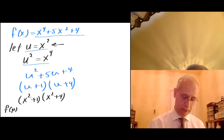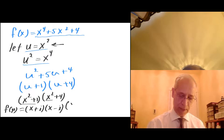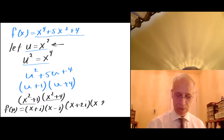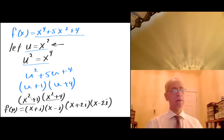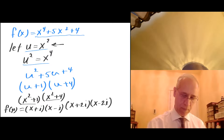The rest of the problem is the same as the previous page. f of x equals x plus i, x minus i from factoring x squared plus 1, and x plus 2i, x minus 2i from factoring x squared plus 4. So the zeros are plus and minus i and plus and minus 2i.